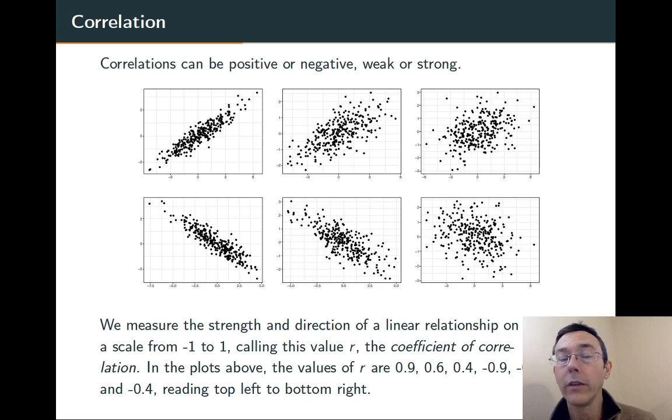Stronger correlations, the data is going to be more clustered around that line that we're imagining. Weaker correlations, it'll be more cloudy. The data will be more spread out.